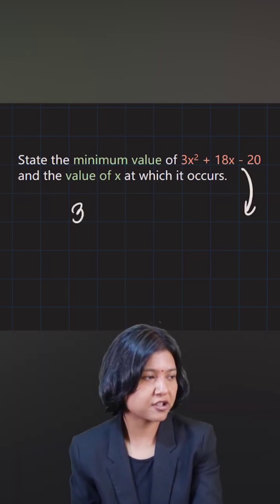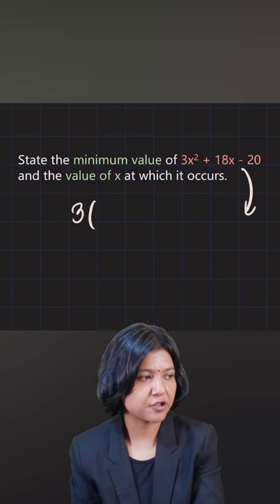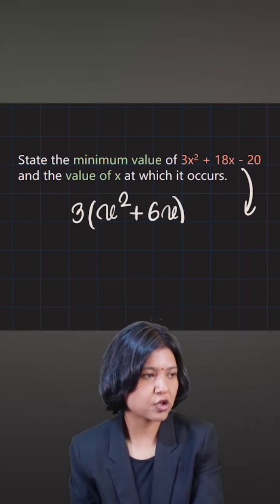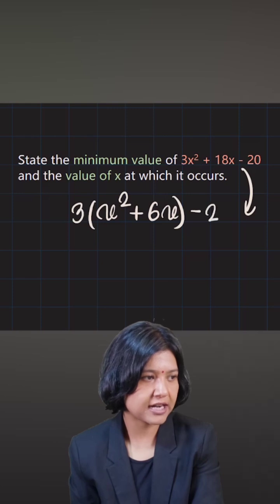You see 3 is a common factor for the first two terms. Let's get rid of it. So 3 whole x squared plus 6x. Note that we are not taking out common for the last term, so I'm writing it outside.